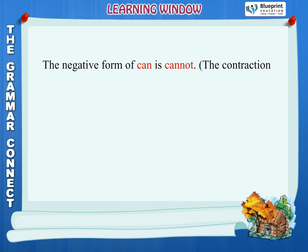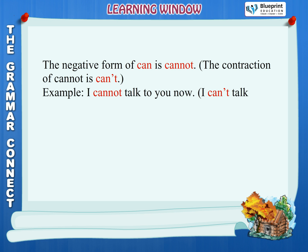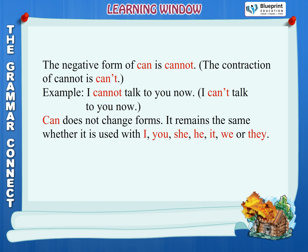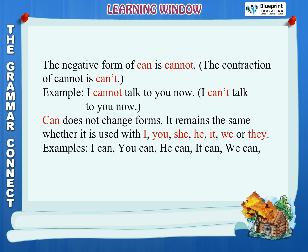The negative form of can is cannot. The contraction of cannot is can't. Example: I cannot talk to you now. I can't talk to you now. Can does not change forms. It remains the same whether it is used with I, you, she, he, it, we or they. Examples: I can, you can, he can, it can.